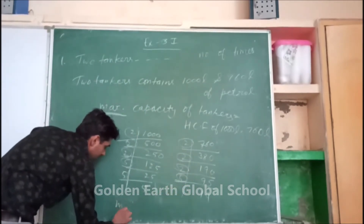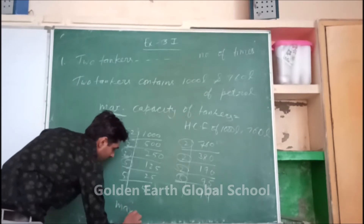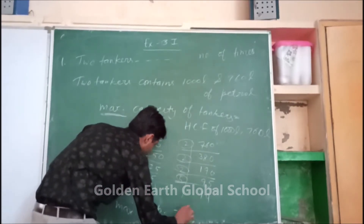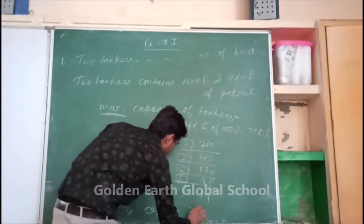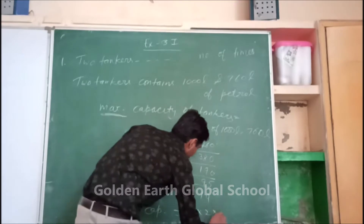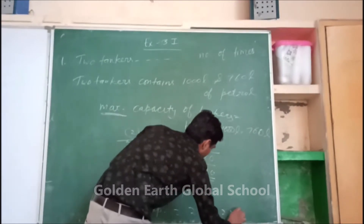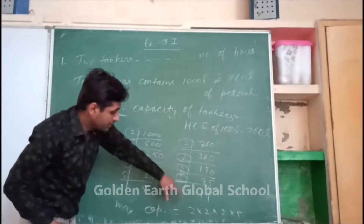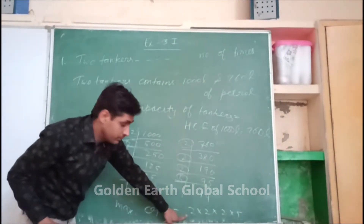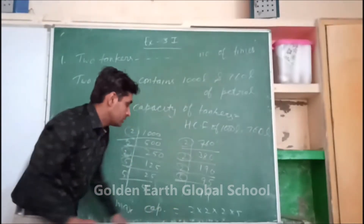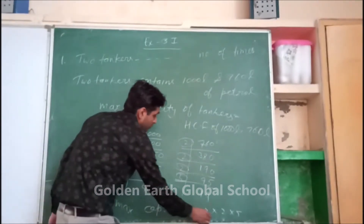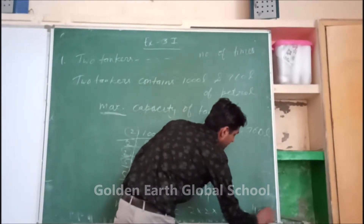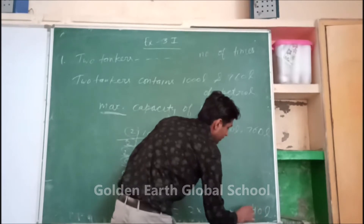So the maximum capacity is 2 × 2 × 2 × 5. You write the common factors once: 2 to the power 3 times 5 equals 8 × 5 = 40 liters. So 40 liters is the maximum capacity of the container.